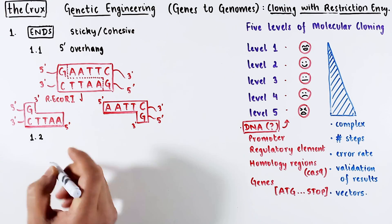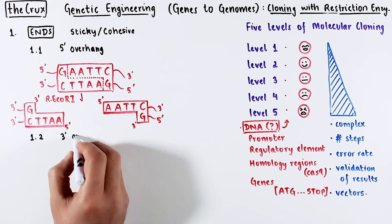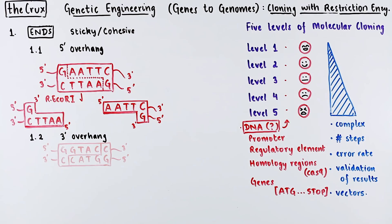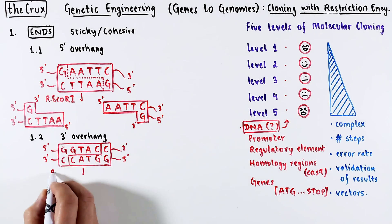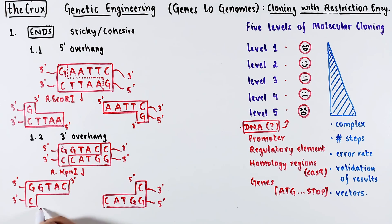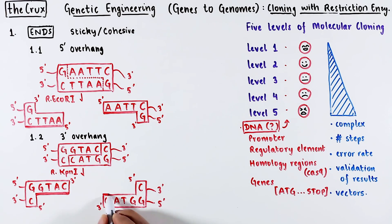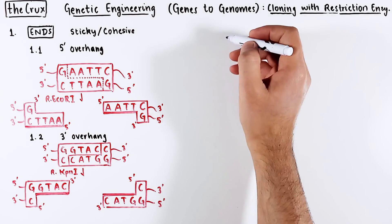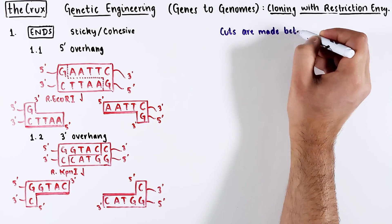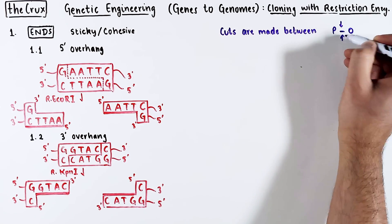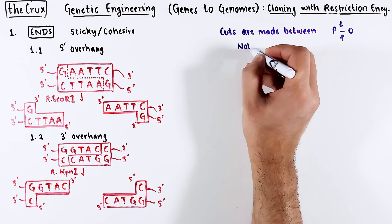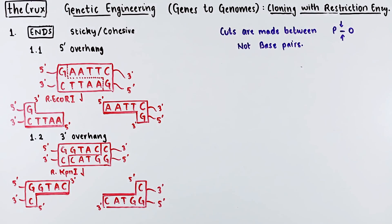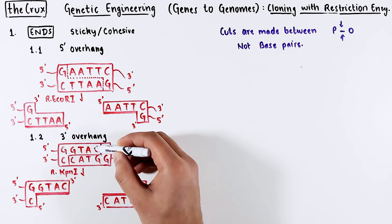The example of EcoR1 is a 5' sticky end because of how the cut was made. You can also have a 3' sticky end. The site recognized by the KPN1 enzyme gives you an L-shaped piece that releases a 3' overhang. Recognize that the cuts made by restriction enzymes are made between the phosphodiester backbone, and not the base pairs.